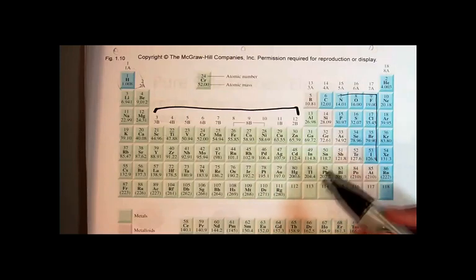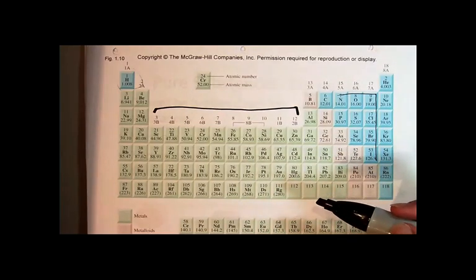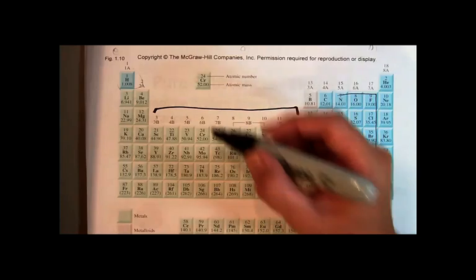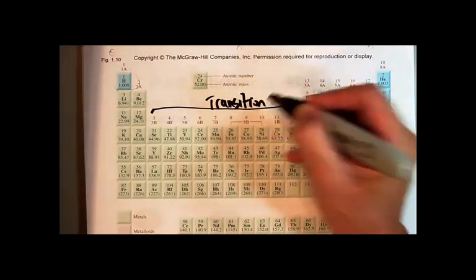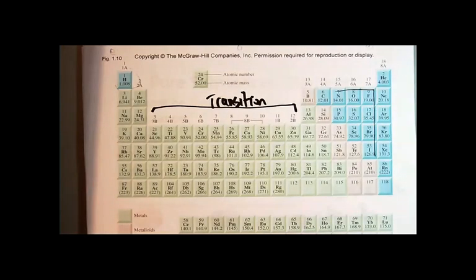Those A-metals are called representative metals, whereas the B-series metals are called transition metals. And they behave differently. Similar, but there's some common characteristics to the transition metals that are not characteristic to the representative metals.